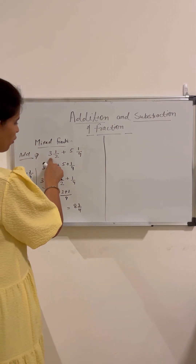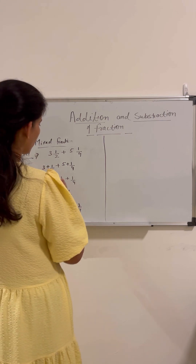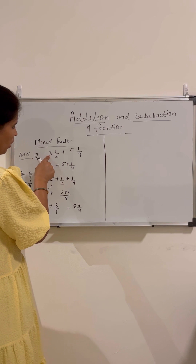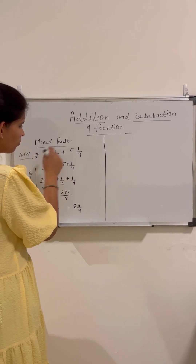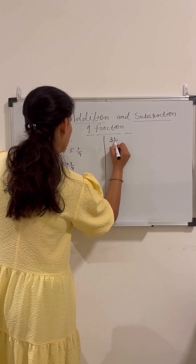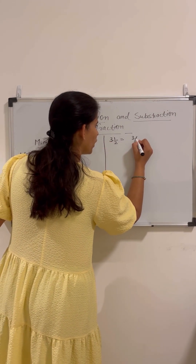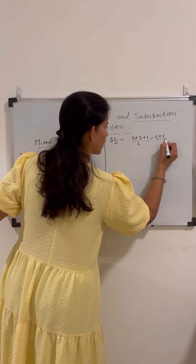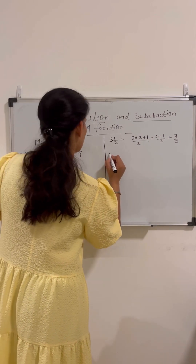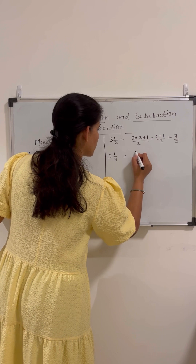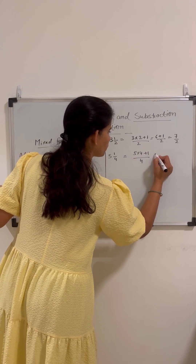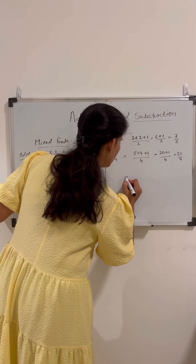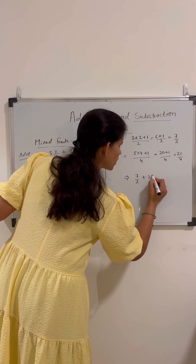The second way is to convert the mixed fractions into improper fractions first and then add them. To convert a mixed fraction into an improper fraction, we multiply the whole number by the denominator and add the numerator. So 3 and 1 by 2 becomes 3 multiplied by 2 plus 1 by 2, which equals 7 by 2. And 5 and 1 by 4 becomes 5 multiplied by 4 plus 1 by 4, which equals 21 by 4. Now we add 7 by 2 plus 21 by 4.